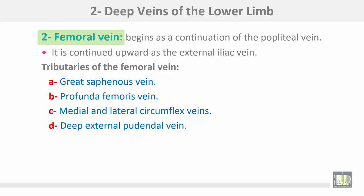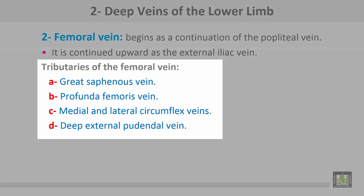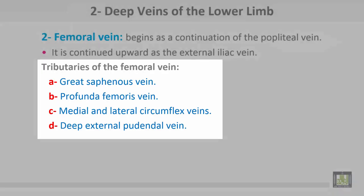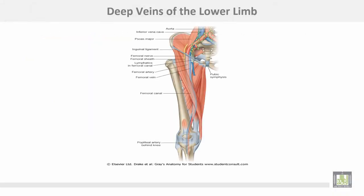The second deep vein is the femoral vein, which begins as a continuation of the popliteal vein and is continued upward as the external iliac vein. Tributaries of the femoral vein include: number one, great saphenous; number two, profunda femoris vein; number three, medial and lateral circumflex veins; number four, deep external pudendal vein. The femoral vein is a continuation of the popliteal vein and ends as the external iliac vein.